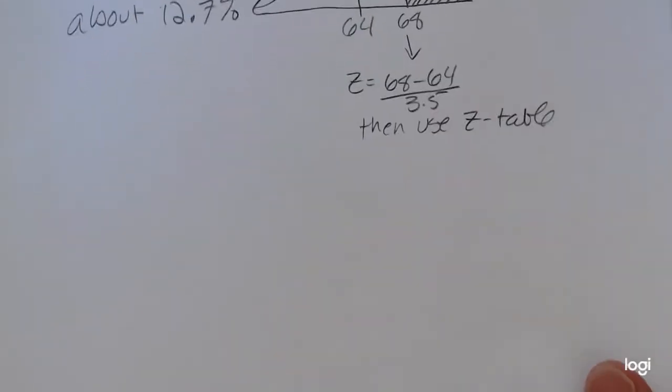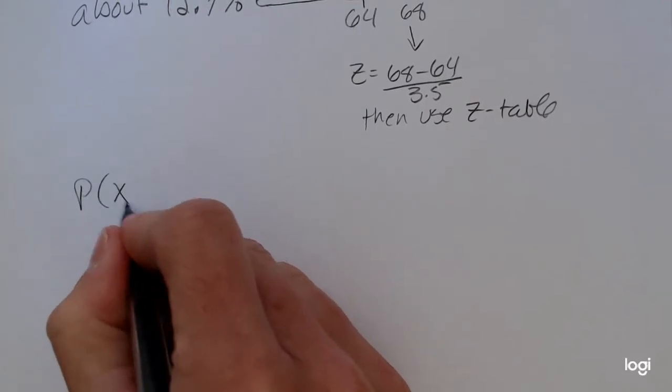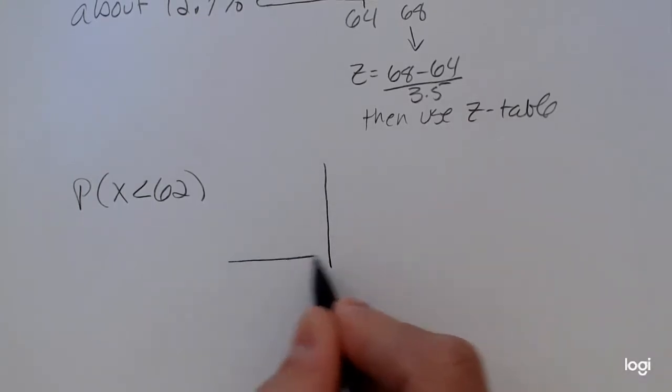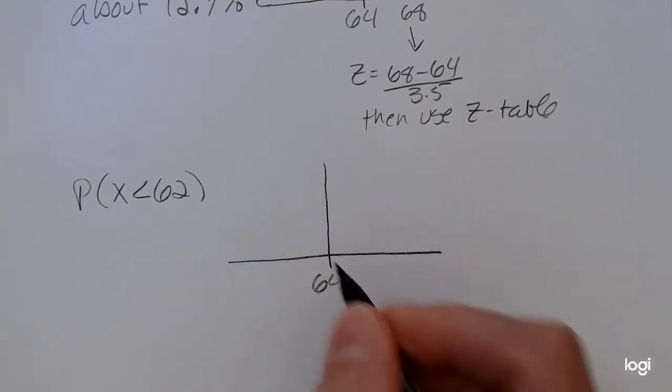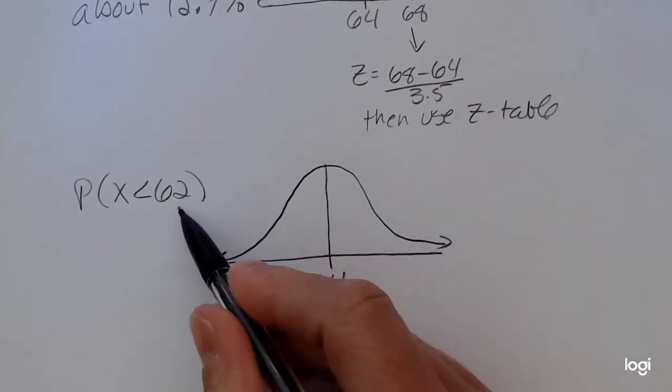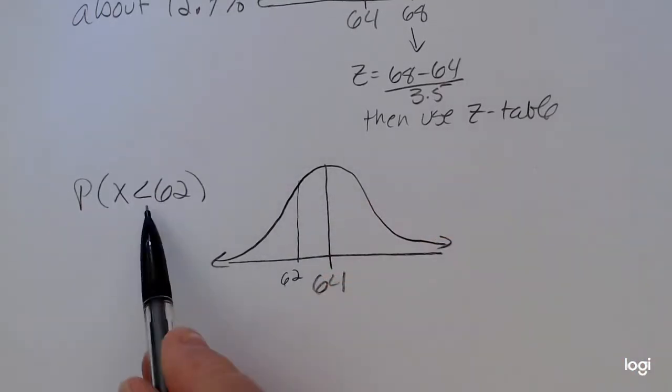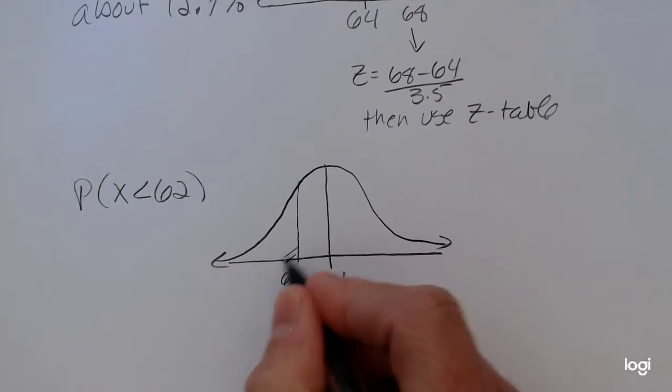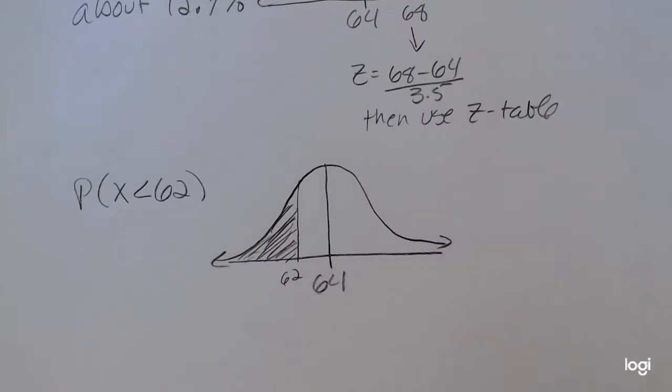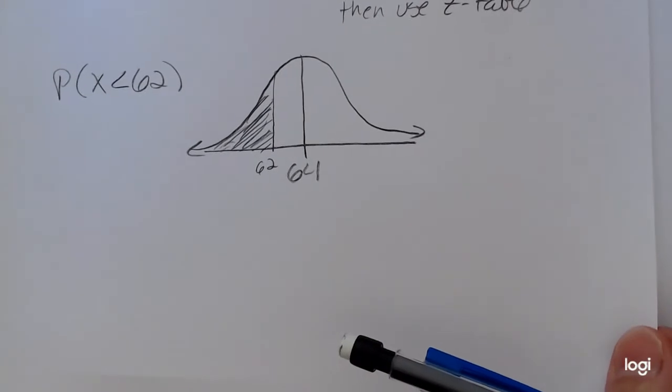So again, I want to sketch what's given. So I have x less than 62, drawing something reasonably close to a bell curve with 64 in the middle. 62 is below the mean, and I'm shading to the left. Now, because I'm shading less than half of the bell curve, I expect my area or my probability to be less than 0.5.